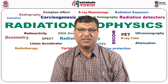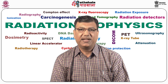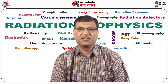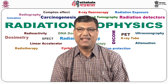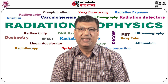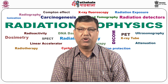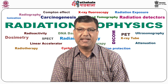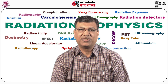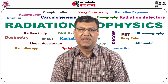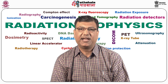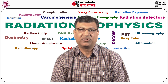Direct ionizing radiation interacts with water present in the cell directly, hits and damages biomolecules like DNA, and causes harmful effects. Examples are electrons, alpha particles, and protons.